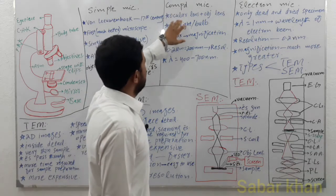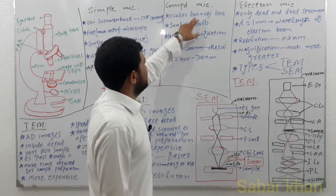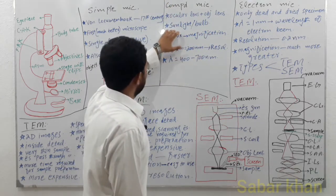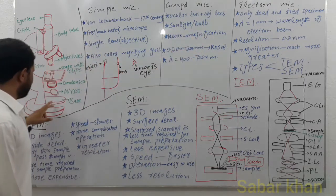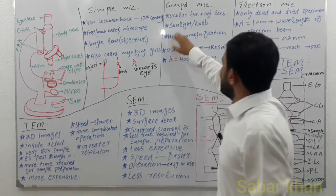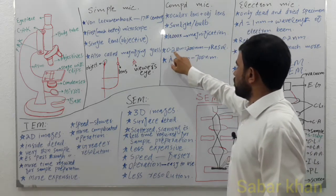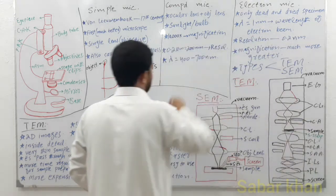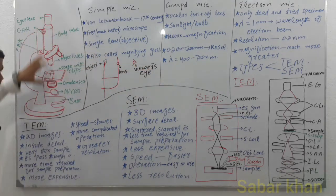This is the light compound microscope. It is called the compound microscope because it has more than one lens — the ocular lens and the objective lens. It is called the light compound microscope because it uses sunlight or a bulb. The modern light compound microscope has a magnification power of 10,000 times, a resolution power of 0.2 micrometers or 200 nanometers, and the wavelength of light used is 400 to 700 nanometers.